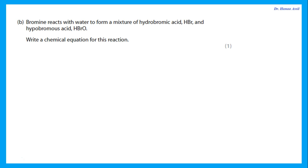Bromine reacts with water to form a mixture of hydrobromic acid and hypobromous acid. Write a chemical equation: bromine is diatomic so it must be Br₂. Br₂ + H₂O → HBr + HBrO. Remember: hydrogen, nitrogen, oxygen, fluorine, and everything under fluorine are diatomic — they need a subscript 2. Checking if balanced: two bromines before the arrow, two bromines after; two hydrogens before, two after; one oxygen before, one after — already balanced.